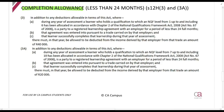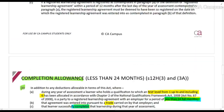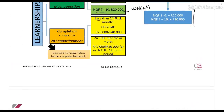Now we look at the completion allowance. Section 12H(3): in addition to any deductions allowed, during any year of assessment, the learner holds a qualification at NQF level 1 to 6, is party to a registered learnership agreement for a period of less than 24 full months, the agreement was entered into for the employer's trade, and — importantly — it has been successfully completed. In that year, the employer must be allowed R40,000. This is the less-than-24-full-months completion allowance.